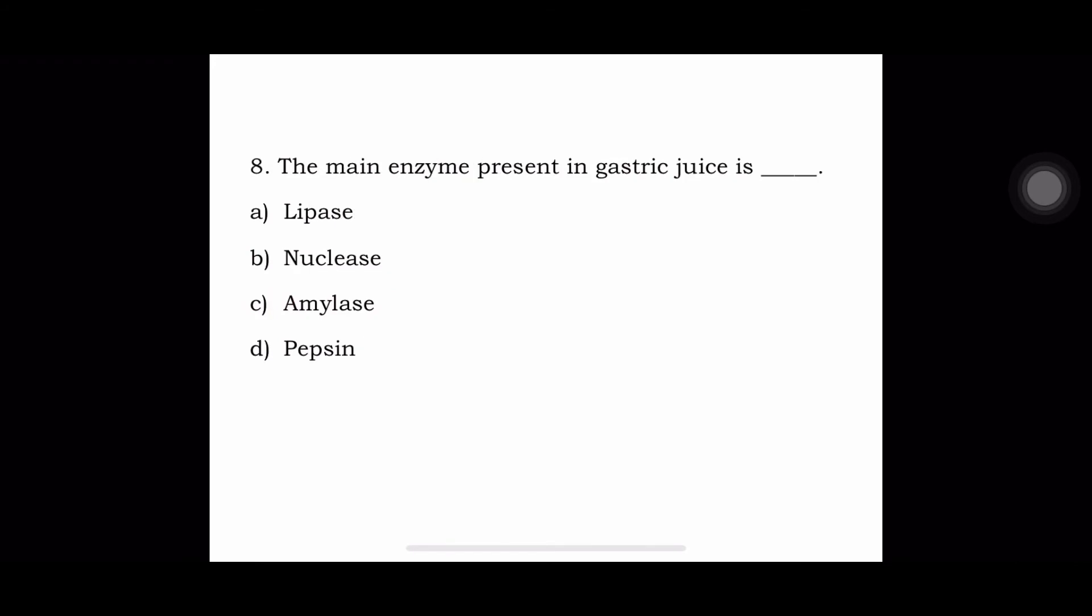Next question: The main enzyme present in gastric juice is a) lipase, b) nuclease, c) amylase, or d) pepsin. The answer is pepsin is present in the gastric juice.